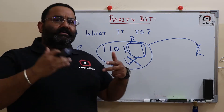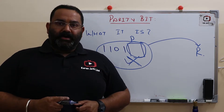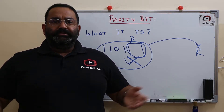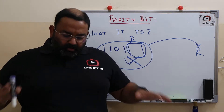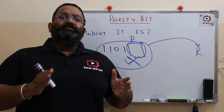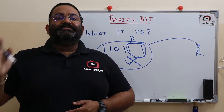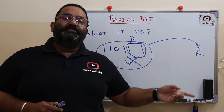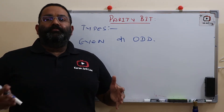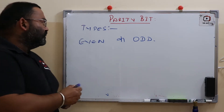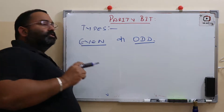So how do we do it? We do it with the help of a parity bit. Parity is of two types: one is called even parity and the other is called odd parity. In even parity, we make sure that the total number of ones being transmitted, along with the parity bit, is an even number.